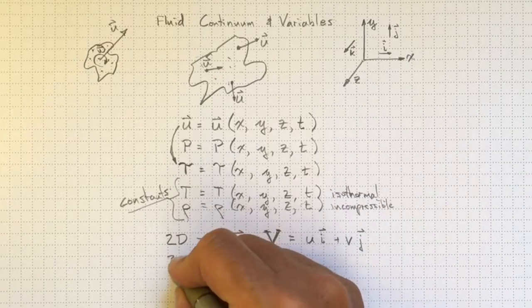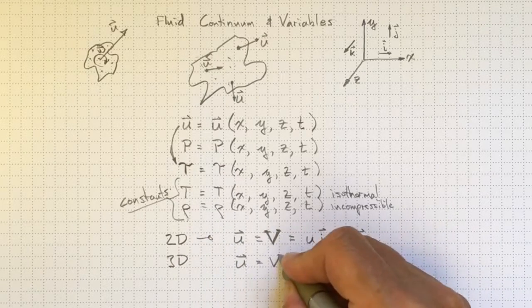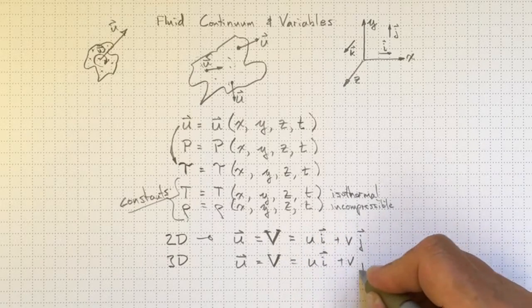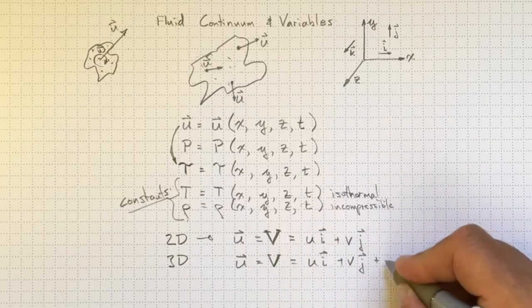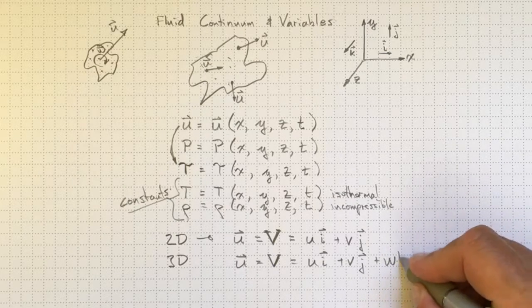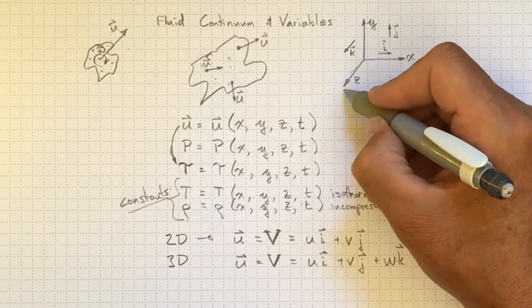Likewise, if we go to 3D, we'll have exactly the same thing, except in addition to the x and y dimensions, we'll pick up a w, a z dimension, a z component in the k direction, this unit vector out along the z axis.